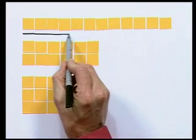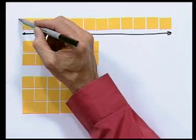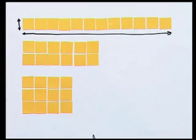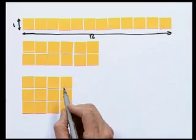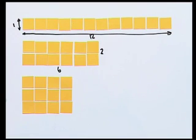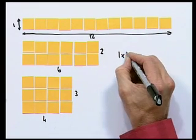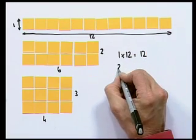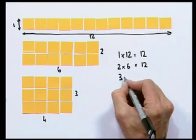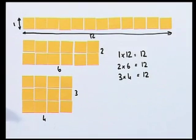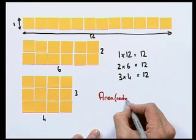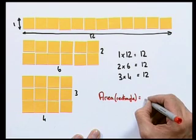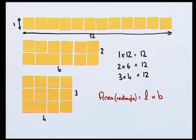Each of these rectangles has a length and a breadth. Notice the first rectangle has a length of 12 units and a breadth of 1 unit. By contrast, this rectangle has a length of 6 units and a breadth of 2 units, and this rectangle has a length of 4 units and a breadth of 3 units. 1 times 12 is 12, 2 times 6 is also 12, and 3 times 4 is 12. We concluded that the area, the number of square units, of the rectangle is equal to the length of the rectangle multiplied by the breadth of the rectangle.